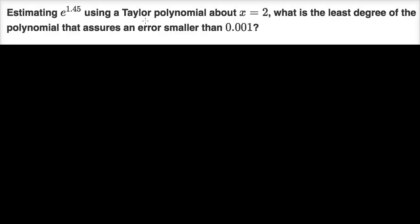Estimating e to the 1.45 using a Taylor polynomial about x equals two. What is the least degree of the polynomial that assures an error smaller than 0.001? In general, if you see a situation like this where we're approximating a function with the Taylor polynomial centered about some value and we want to know how many terms or what degree we need to bound the error, that's a pretty good clue that we're going to be using the Lagrange Error Bound or Taylor's Remainder Theorem.